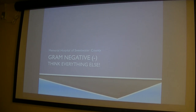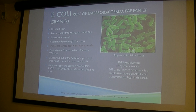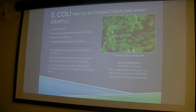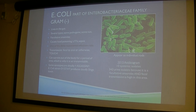Gram-negatives — think everything else. Gram-negative bacteria are primarily rod-shaped, especially the ones we see here at MHSC. E. coli is part of the Enterobacteriaceae family. We had 10 systemic isolates last year and 343 urine isolates — where does this bug like to go? UTIs. It's a facultative anaerobe and fecal transmission really contributes to that. E. coli is a very large diverse family; some types are even used to grow drugs. It can cause food poisoning, UTIs, and sepsis.